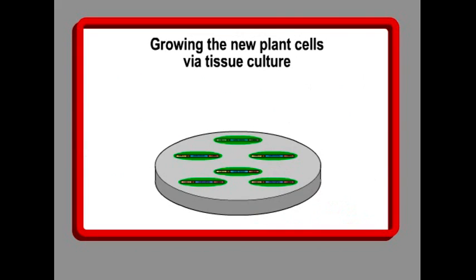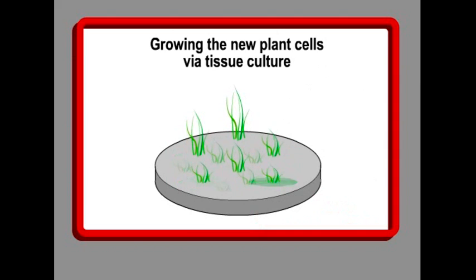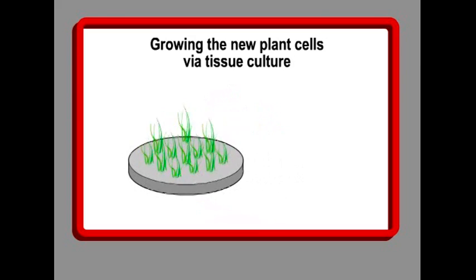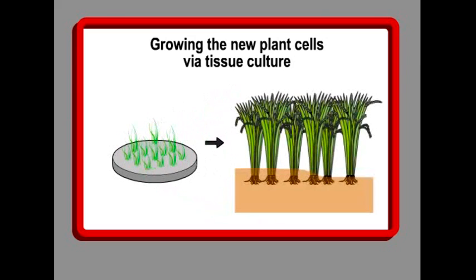We now grow the plant cells with the new gene construct into new plants by using further chemicals and hormones. From this newly developing plant, we can make many more of the same.